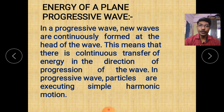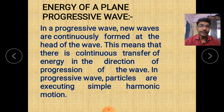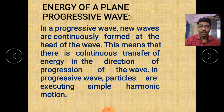In a progressive wave, new waves are continuously formed at the head of the waves. This means there is continuous transfer of energy in the direction of progression of waves. In the progressive wave, particles are executing simple harmonic motions. The kinetic energy of a particle at the mean position is maximum because the velocity is maximum at the mean position.